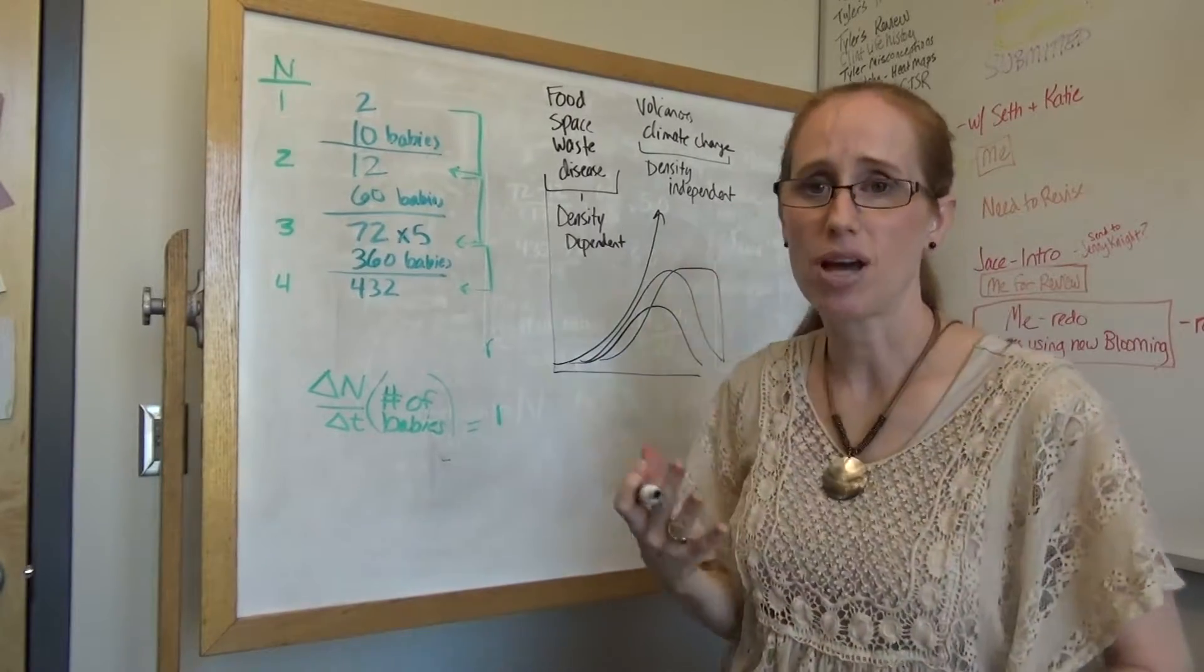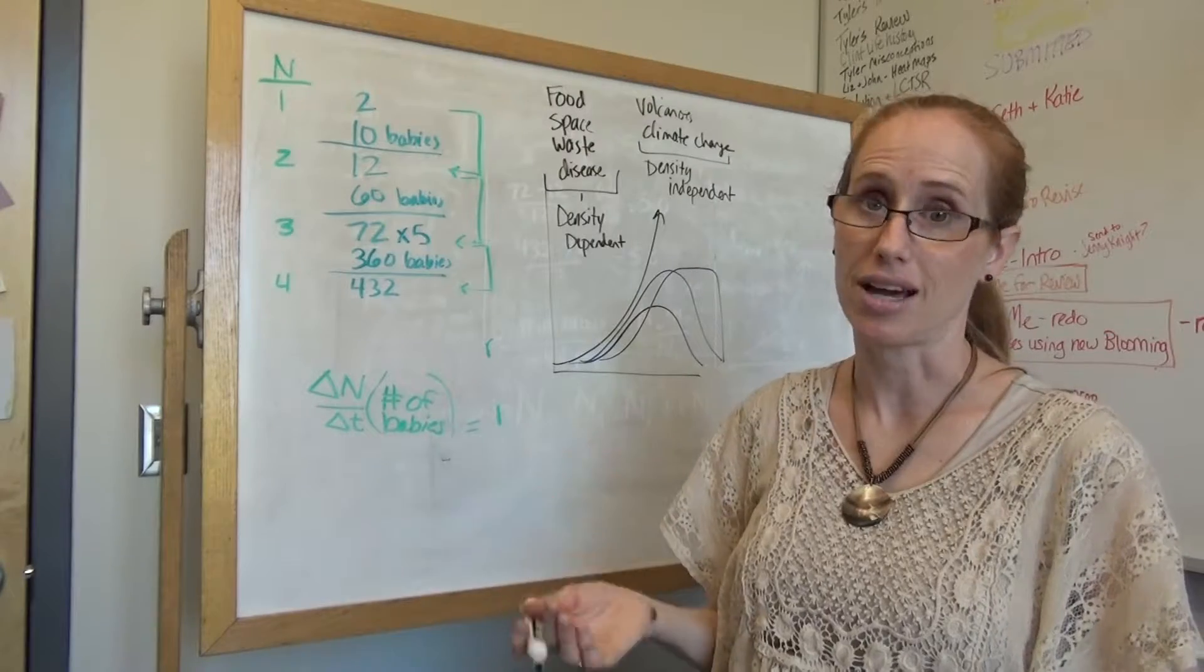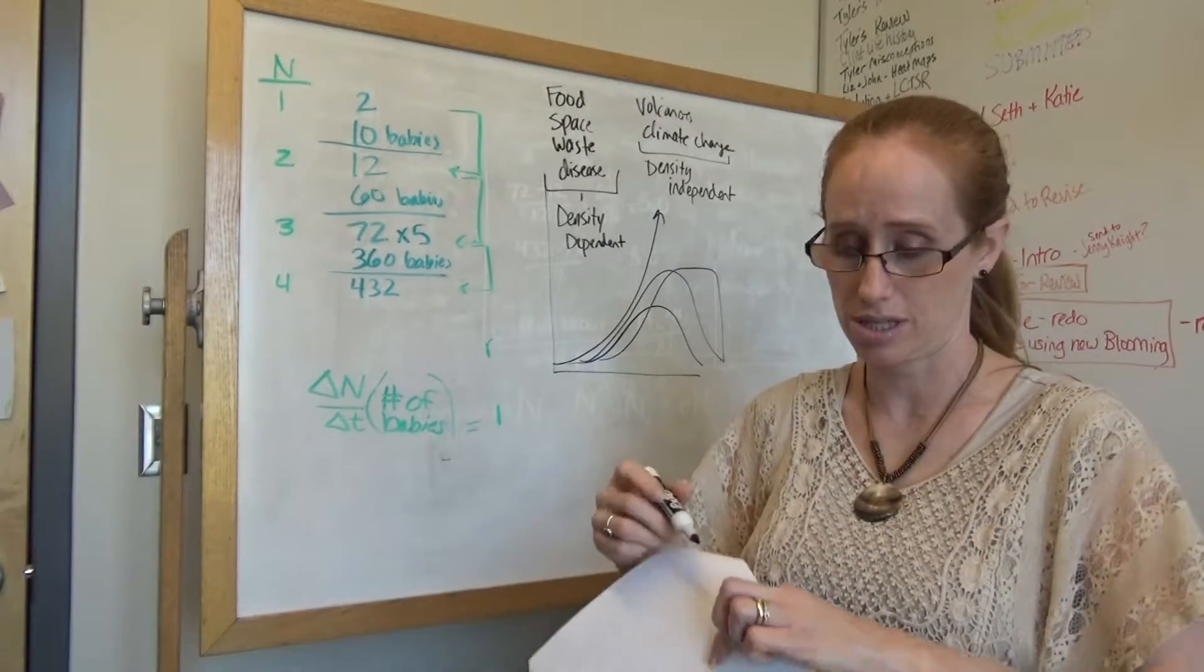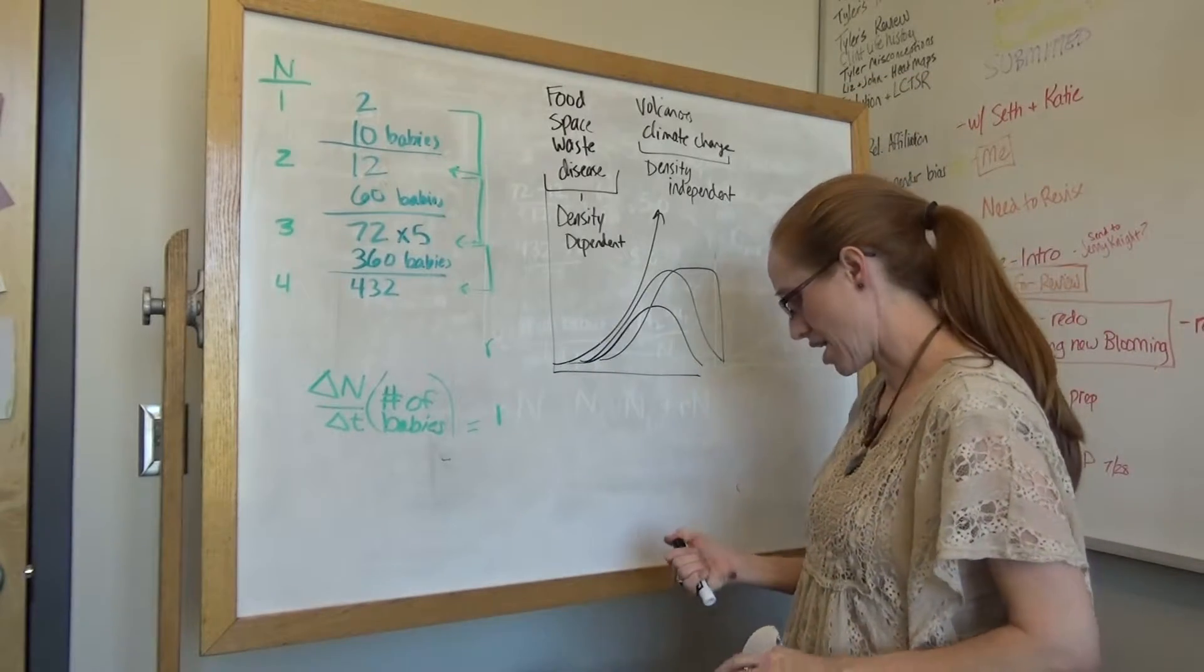So in the case of our fly populations, it's most likely a density dependent thing that's happening, like lack of food, lack of space, buildup of waste. Maybe disease, but mostly it's the food, space, and waste.